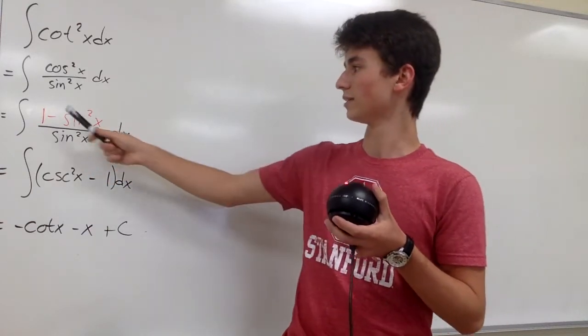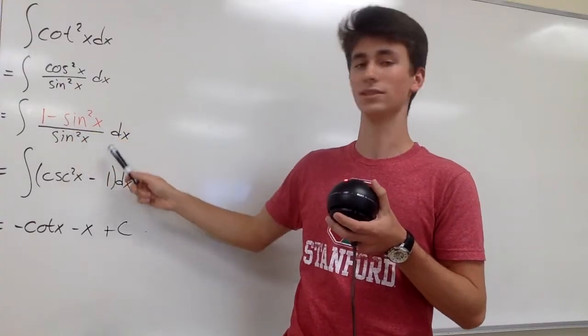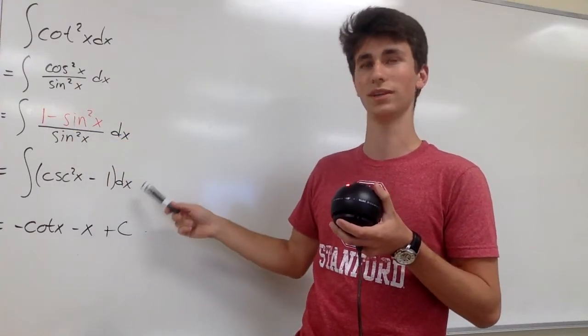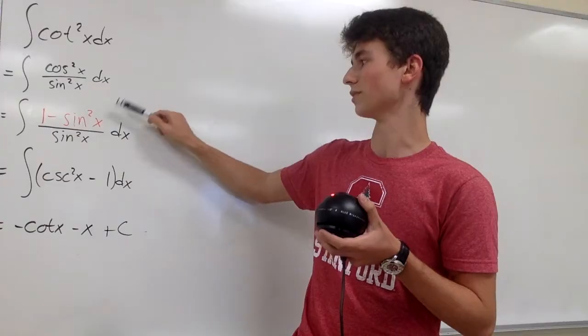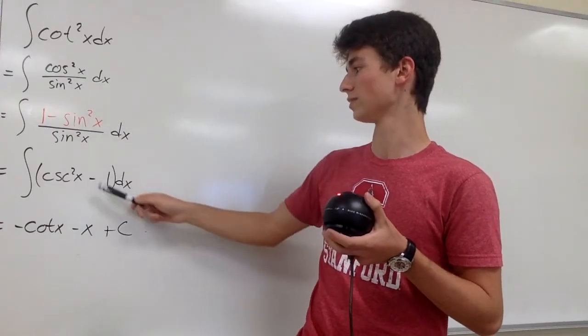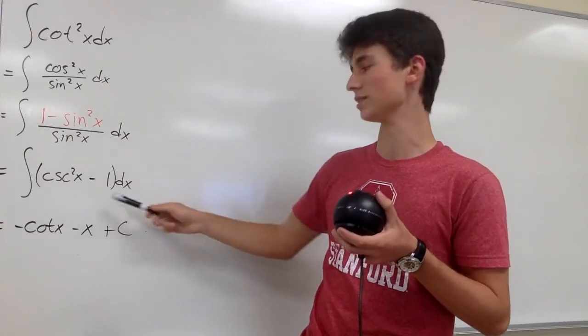And then it becomes 1 over sine squared of x is equal to cosecant squared of x. And then sine squared of x over sine squared of x is 1. So we have cosecant squared of x minus 1 dx.